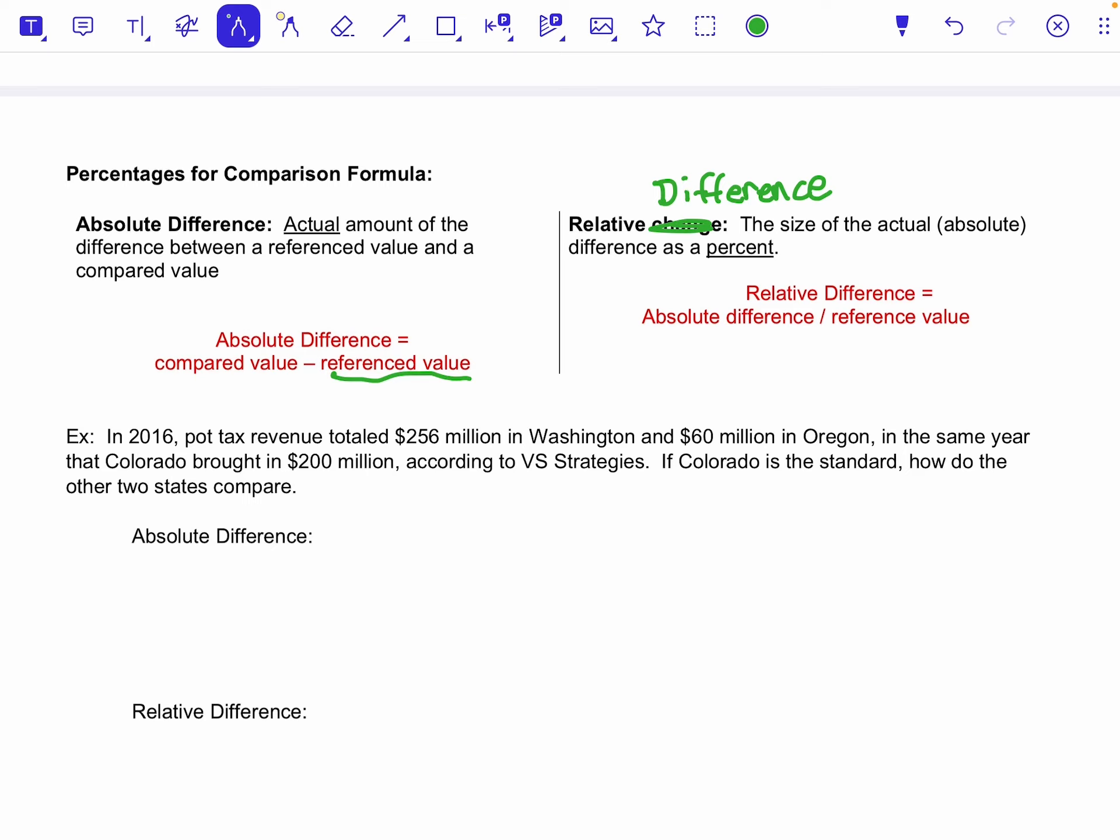And again, it's that same sort of setup where we take that absolute difference and instead of dividing it by the original value, we're dividing it by the reference value, which might be like the national average or something like that. But again, same structure, slightly different wording, but you're basically being asked to do the same thing.